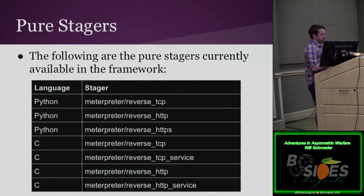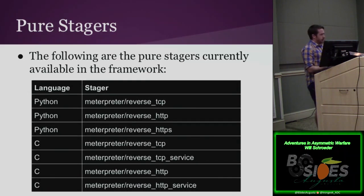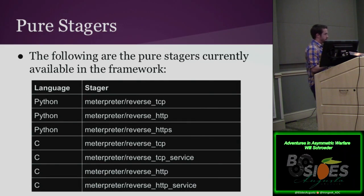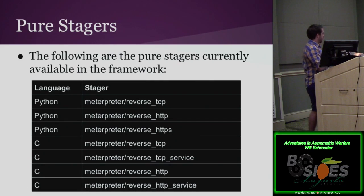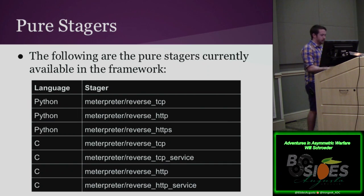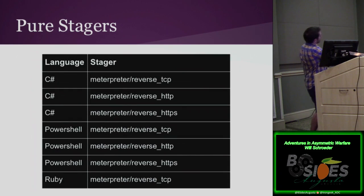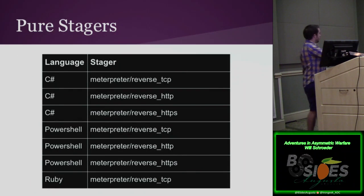We started writing a bunch of these stagers in different languages: Python reverse TCP, HTTP, and HTTPS — the HTTP/HTTPS ones are actually easier, where you just connect to an HTTP handler, download a blob that's either a reflectively injectable DLL or shellcode, and jump execution to it. We also have C with reverse TCP, reverse TCP service (which works with PSExec), HTTP and HTTP service. C-sharp with TCP, HTTP, and HTTPS. PowerShell — we released at least a couple of pure stagers. And Ruby, which I'll talk about next.